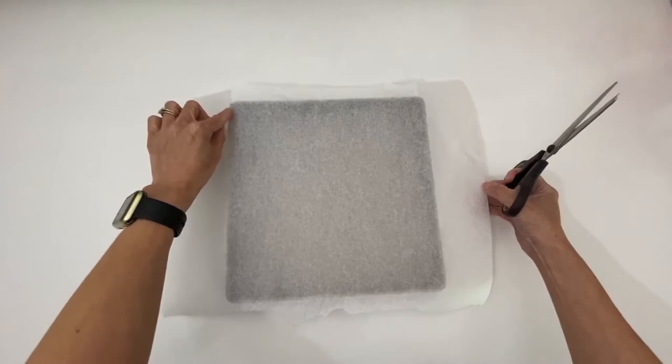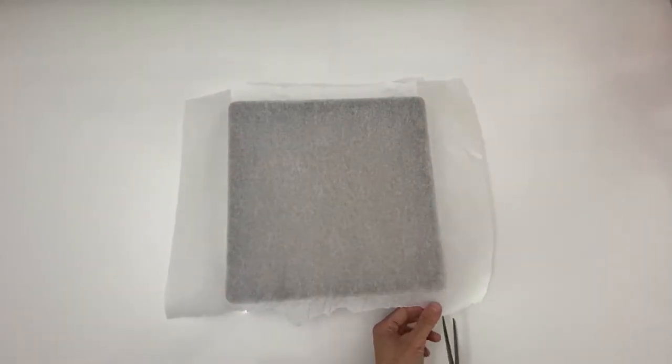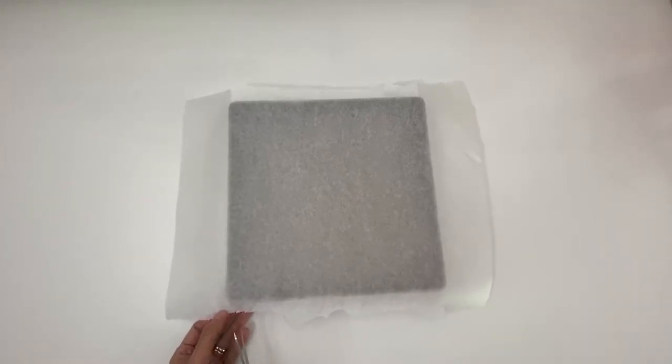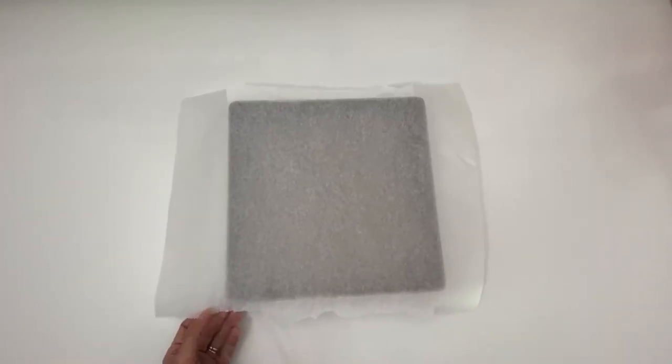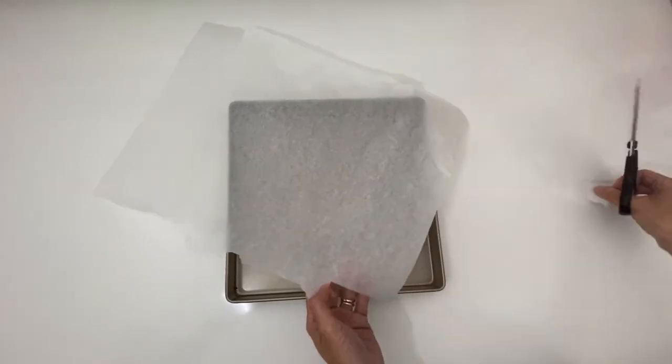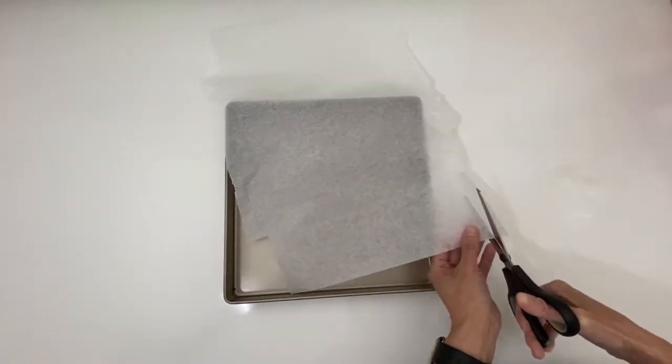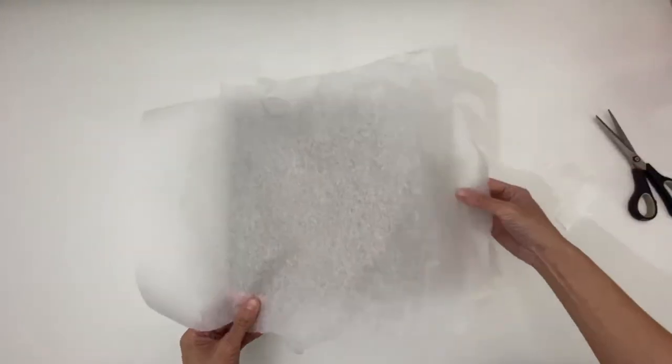Then turn the paper, make sure the ends of those two lines are placed on top of the edge of the tin. Then repeat the same process on this side. Next, use these four lines as a reference and roughly cut out the four corners. Just like this.